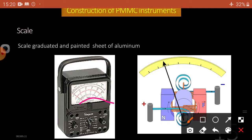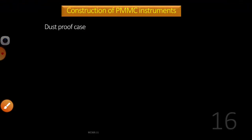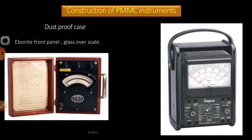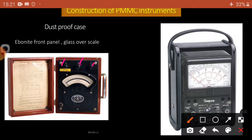All internal parts are placed in a dust-proof case. Without a dust-proof enclosure, clogging and bearing jamming can occur, causing incorrect readings. The case may be wood or plastic, with all parts inside. The terminals — usually two or three — are exposed at the top for external connections, and different terminal types are used for various measurement purposes.